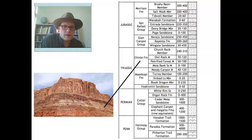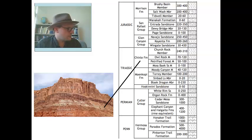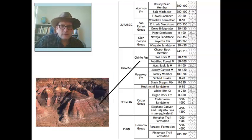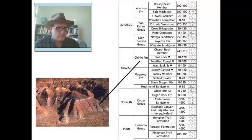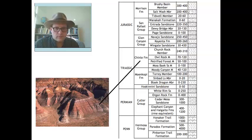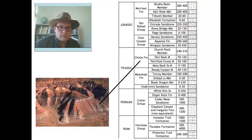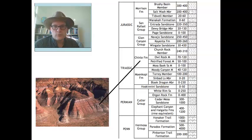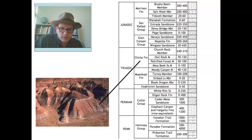On top of the Moenkopi we have the Chinle, a unit of variable thickness that gets fairly thick as you head down into Arizona. The Chinle is easily recognized because of its variegated units of different colors — reds and whites banded — mostly mudstones and siltstones. The Chinle is famous for containing the Petrified Forest National Monument in Arizona and also produces many of the early dinosaurs. It's a fully terrestrial unit where the variegated beds represent paleosols.